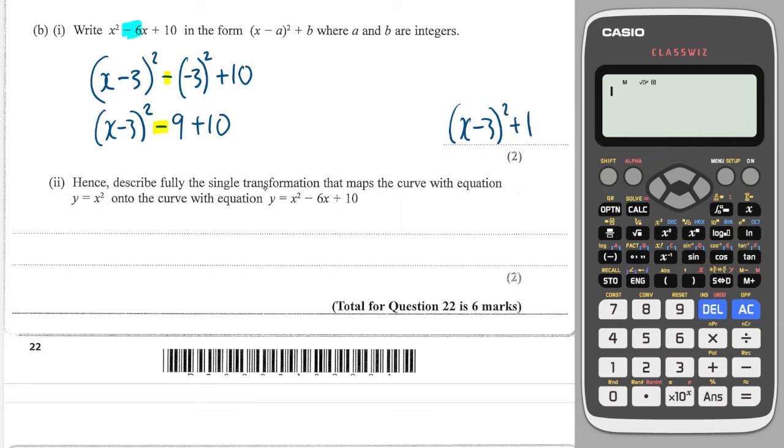The next question says describe fully the single transformation that maps the curve with equation y equals x squared onto the curve with this equation. Well, we go from x squared to x minus 3 squared plus 1. So x has been replaced with x minus 3, and that means it's translated to the right by 3. And we're plussing on 1, which means we translate up by 1. So this is the translation that completes that graph transformation.